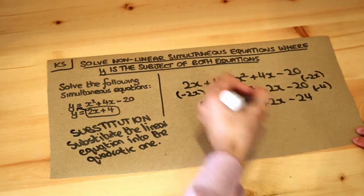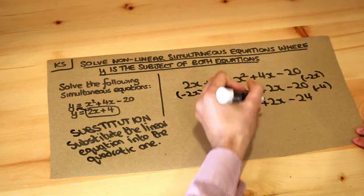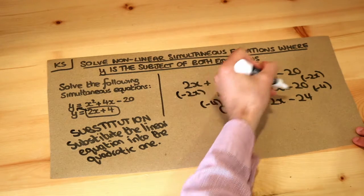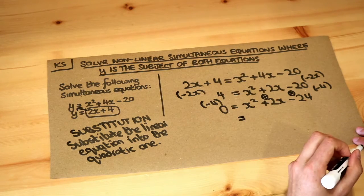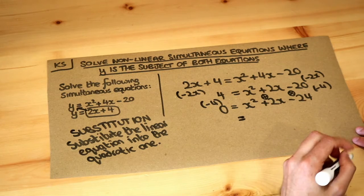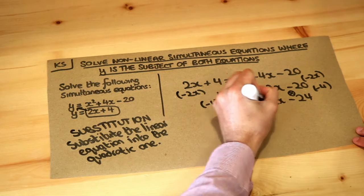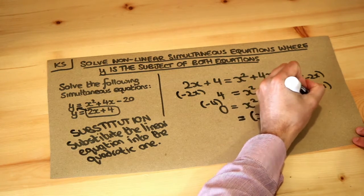Remember from previous videos that we just factorize this to solve, so we need to find two numbers which add to give 2 and times to give minus 24. Those two numbers are 6 and minus 4, so we factorize it as x plus 6 and x minus 4.